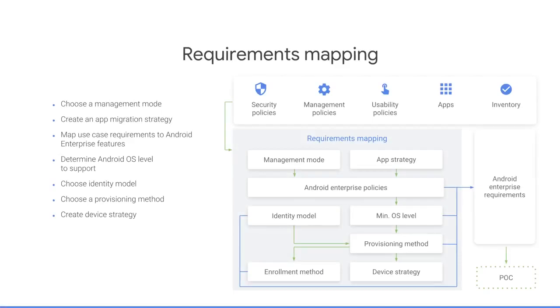In the requirements mapping phase, you should use your analysis documentation to identify your Android Enterprise feature requirements. Determine which management modes and provisioning methods would work best for your scenario. Create an app migration strategy and choose a minimum OS level to support based on which versions support the features you require. And create a device strategy for those devices that will not meet the minimum OS requirement.